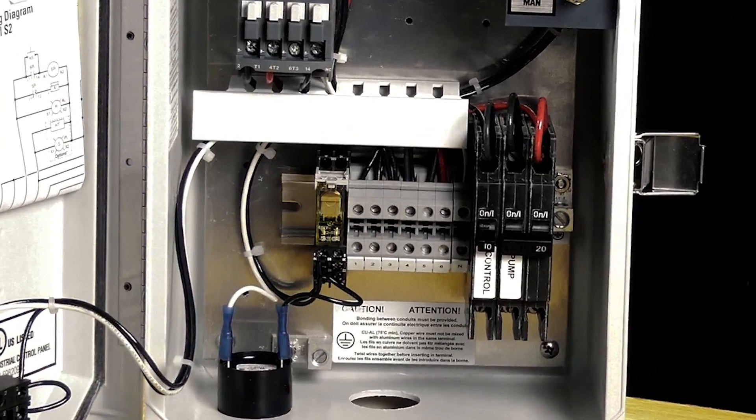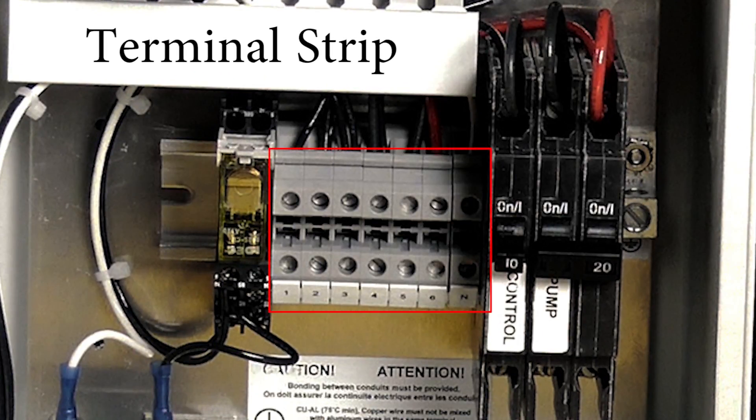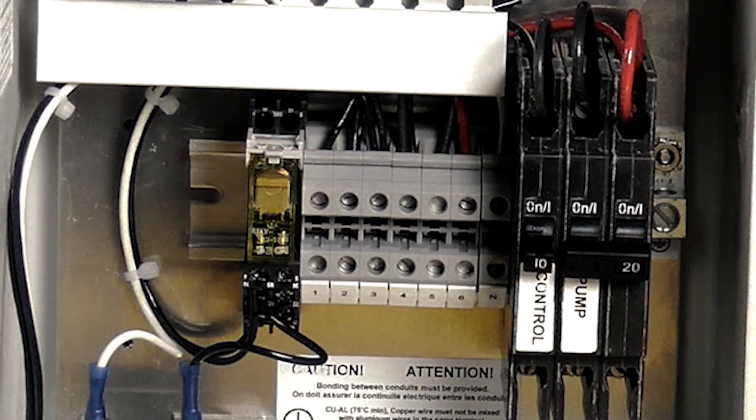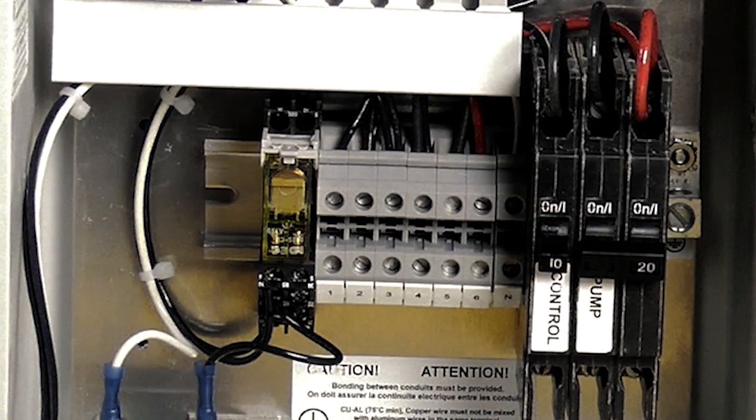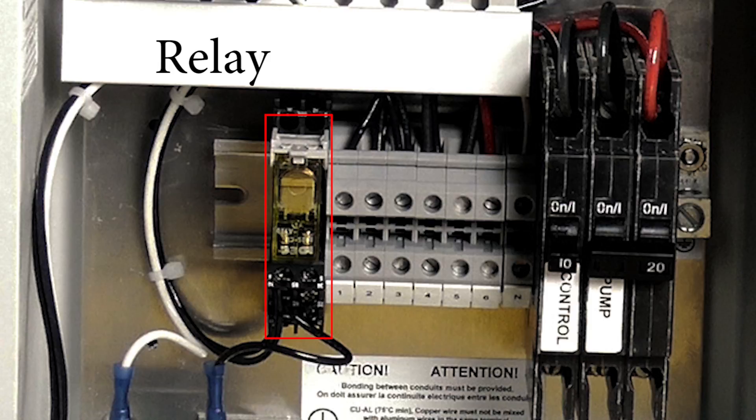So moving over, we've got the terminal strip here. Orenco does a really good job making these panels really neat and tidy. We've got the terminal strip numbered for easy reference when it comes to installing and troubleshooting the panel. Just a small relay located here, which takes care of sending the signals throughout the panel based on what's going on on the terminal strip and through the controls.